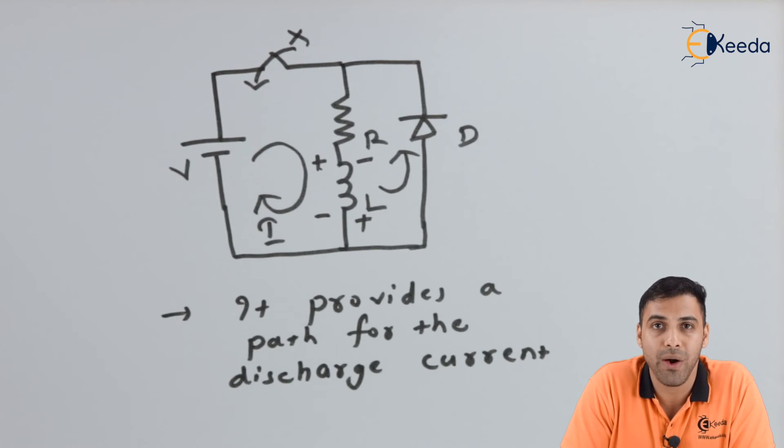Because of the free wheel diode, it creates a complete path for the discharge current which prevents overcurrent protection and prevents harmonics from being introduced in the circuit. And finally, this is very important for the safety purpose as well.